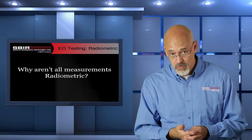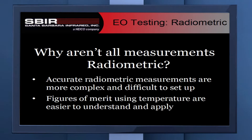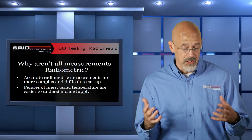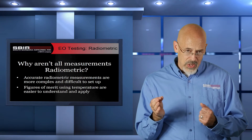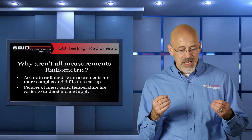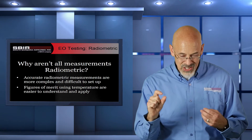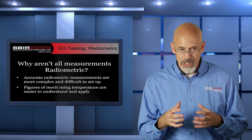So why aren't all of our measurements radiometric? There are two reasons. One is it's hard to do — it's not an easy measurement to set up because there are a lot of different sources that impinge upon that camera, and to control all of those so you can really determine the characteristics of a sensor involves some complexity and being aware of a lot of different error sources. The second reason is that figures of merit based on temperature are much easier to understand. You can get the idea of noise in terms of temperature, but understanding it in terms of radiometric measurements is a little bit harder.